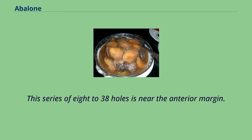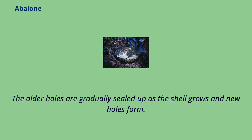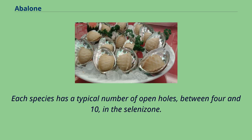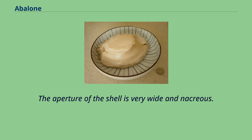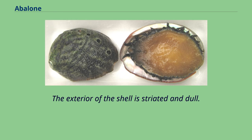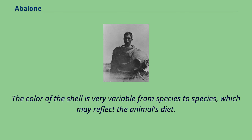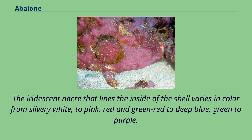This series of 8 to 38 holes is near the anterior margin. Only a small number is generally open; the older holes are gradually sealed up as the shell grows and new holes form. Each species has a typical number of open holes, between 4 and 10, in the selenizone. An abalone has no operculum. The aperture of the shell is very wide and nacreous. The exterior of the shell is striated and dull. The color of the shell is very variable from species to species, which may reflect the animal's diet. The iridescent nacre that lines the inside of the shell varies in color from silvery white, to pink, red and green, red to deep blue, green to purple.